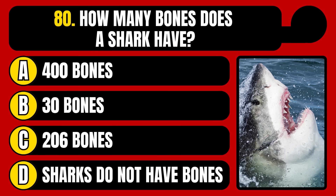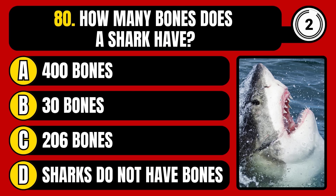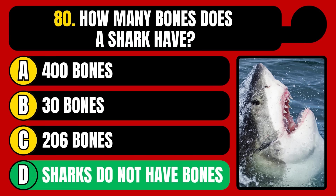How many bones does a shark have? 400 bones, 30 bones, 206 bones, or sharks do not have bones? The correct answer is option D, sharks do not have bones.